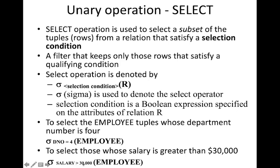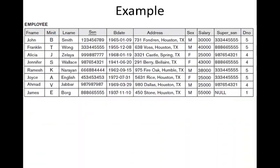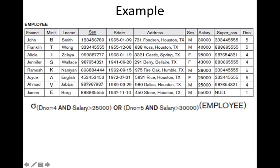If we want to select employees whose salary is greater than thirty thousand dollars, we write sigma(salary > 30000)(employee). This selects a subset of rows — those employees with salary greater than thirty thousand will only be listed in the output. The output is also a table, a subset of the whole employee table. The condition can also be a more complex, lengthy expression.